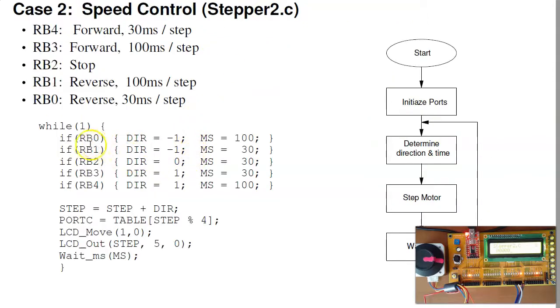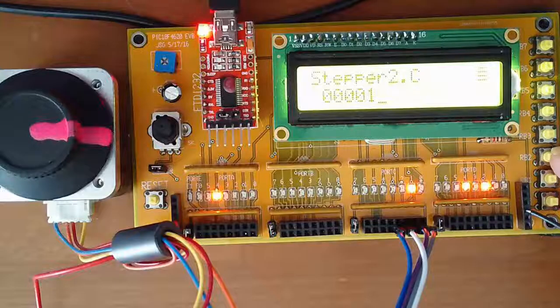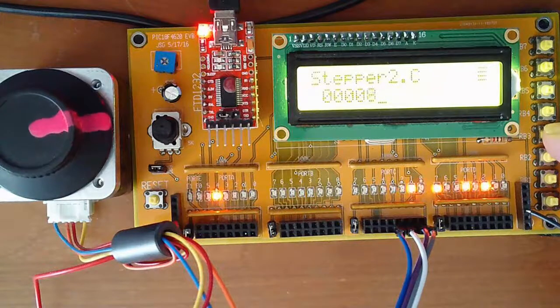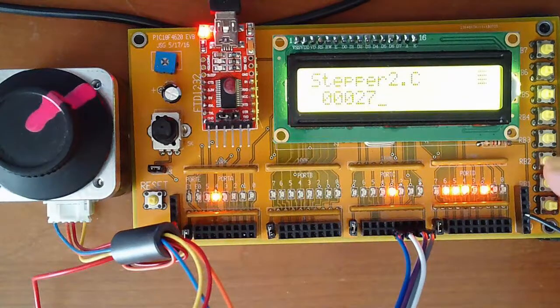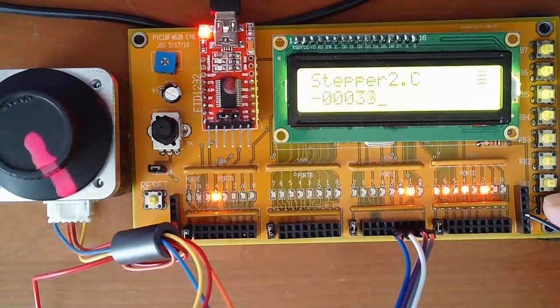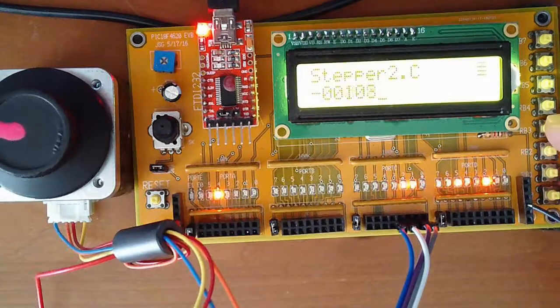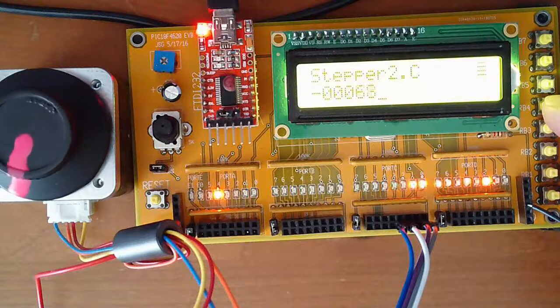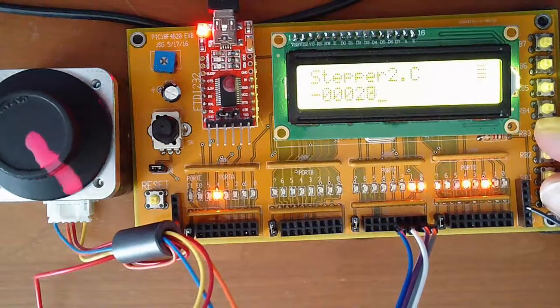A second program would do that. If I push the buttons, I can take these instead of being plus 1, make it direction, change direction. Plus 1 is forward, 0 is stopped, minus 1 is backwards. Instead of 100 milliseconds, vary it. What that does is I can now vary the speed of the motor based upon the button that I push. For example, RB3 is forward slow, stop, reverse slow, reverse fast, forward fast. So I now have speed control for a stepper motor.